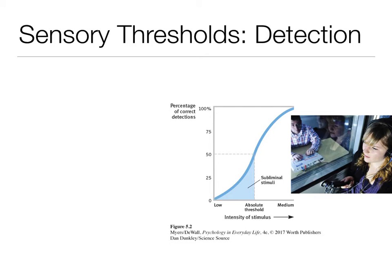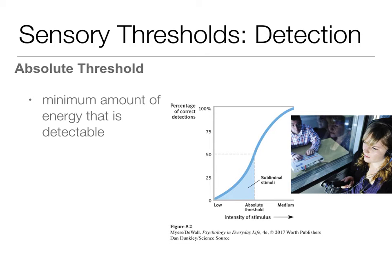To be able to detect different information, we have what's called an absolute threshold. The absolute threshold works for all of our senses and is the minimum amount of energy that's detectable. It depends on what kind of sense we're talking about, but it's the minimum stimulation needed to detect it. Sometimes something can be touching you and you don't feel it, or there's a sound someone else hears that you don't - it's not meeting your absolute threshold.